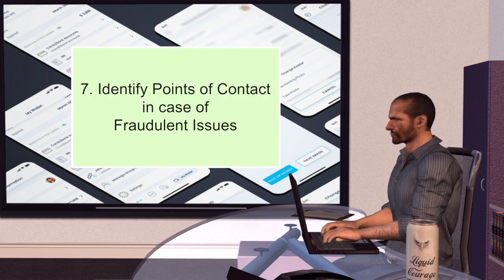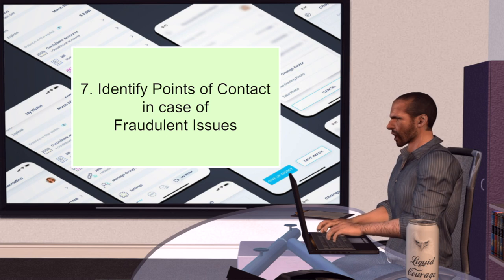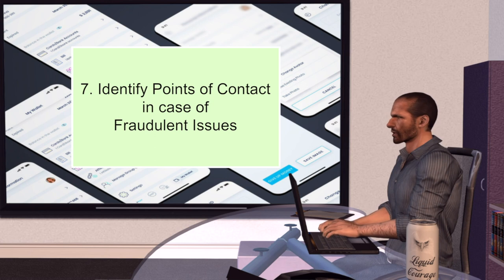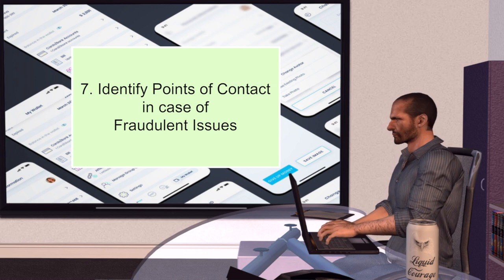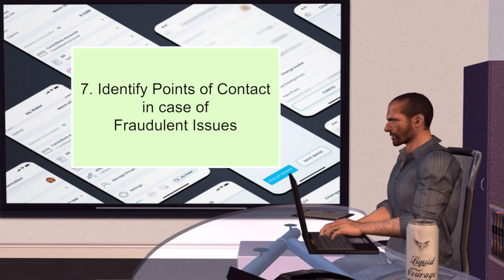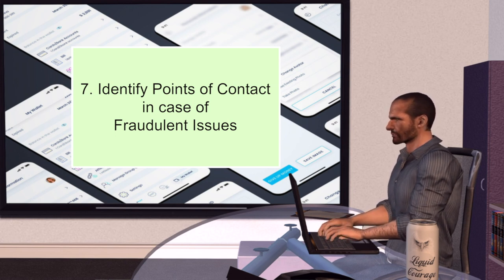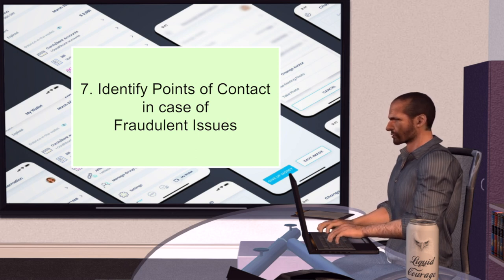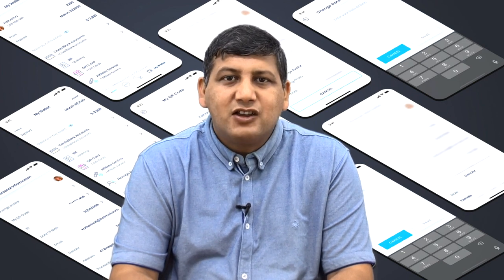Number seven, identify points of contact in case of fraudulent issues. For any fraudulent activity occurring on the user's account — in scenarios like when the phone is lost or stolen, an individual card stored in the wallet is lost, or the account has been hacked — appropriate points of contact for resolving the issue should be understood by the user. The user must completely understand the e-wallet provider's contract terms and conditions. I hope you will be able to secure your e-wallets using these tips. Thank you very much.